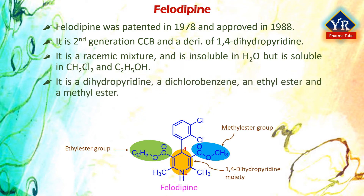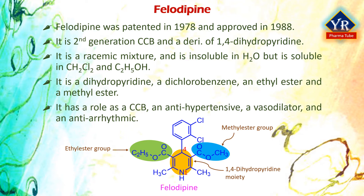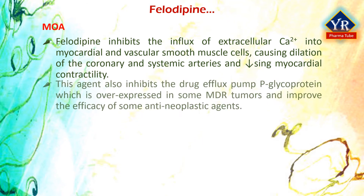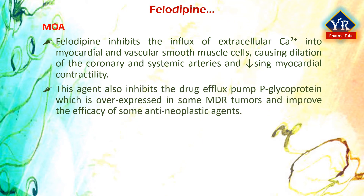Felodepin is a dihydropyridine, a dichlorobenzene, an ethyl ester, and a methyl ester. It has a role as a calcium channel blocking agent, an anti-hypertensive agent, a vasodilator agent, and an anti-arrhythmic drug.